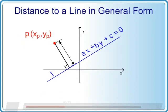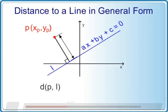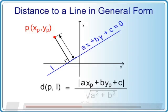The general distance equation can be written as distance from P to L equals absolute value of axp plus byp plus c over square root of a squared plus b squared.